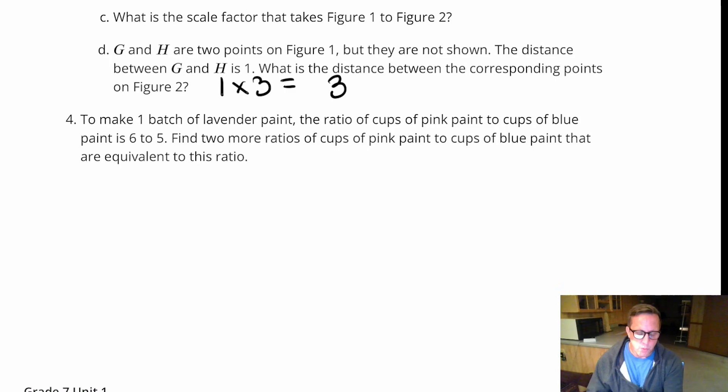All right. For number four, to make one batch of lavender paint. Excuse me. To make one batch of lavender paint, the ratio of cups of pink paint to cups of blue is six to five. Find two more ratios of cups of pink to cups of blue paint that are equivalent to this ratio.